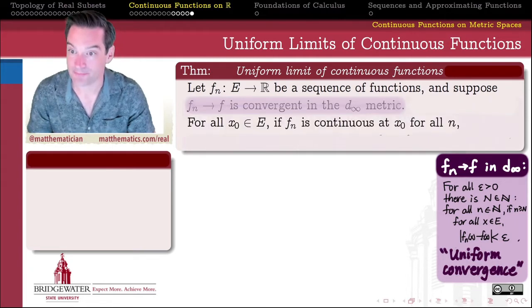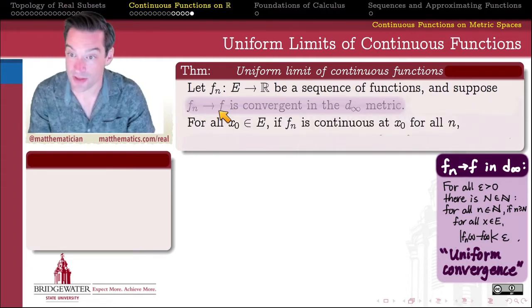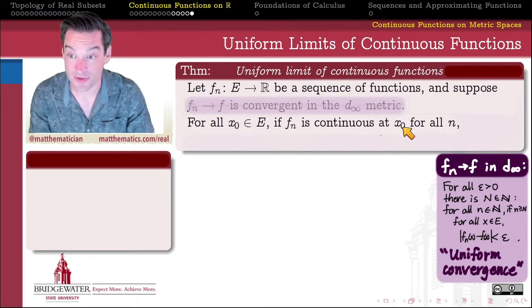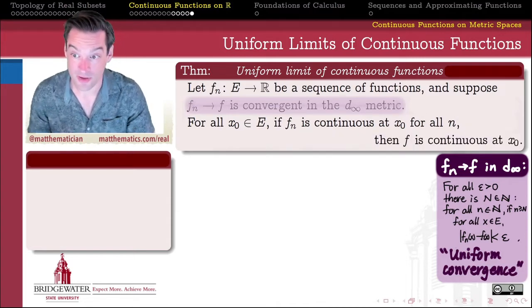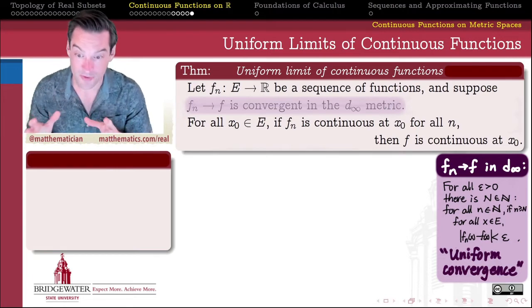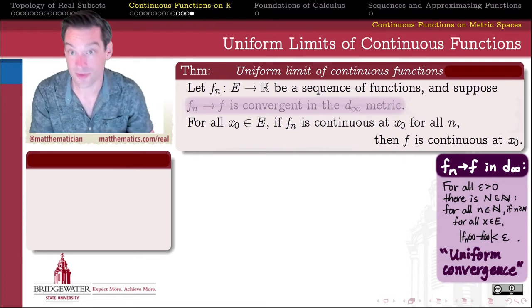So what does this theorem say? If I have a uniformly converging sequence of functions, and if all of my functions are continuous at a point x0, then we want to conclude that the limiting function must also be continuous at x0. In other words, if all of my sequence functions are continuous, then my limiting function is also continuous when the sequence converges in this uniform sense.